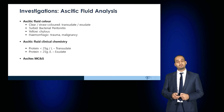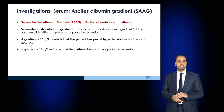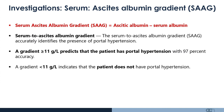The ascitic fluid should be sent for microculture and sensitivities. In the presence of ascites, the serum ascites albumin gradient (SAAG) is calculated by subtracting the ascitic albumin from the serum albumin. If this is 11 or more, it suggests portal hypertension; a gradient of less than 11 suggests the patient is unlikely to have portal hypertension.